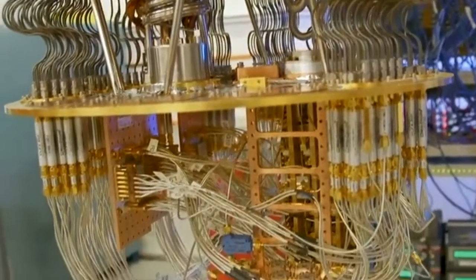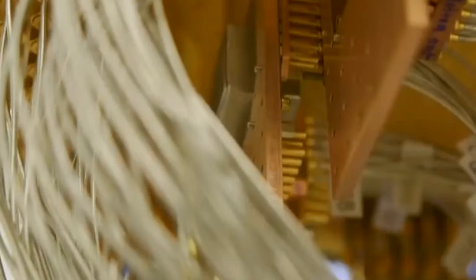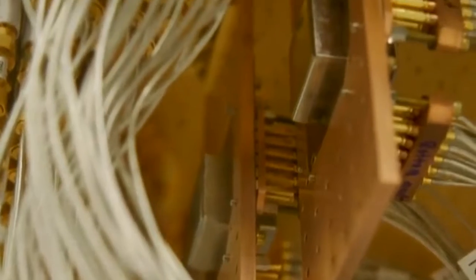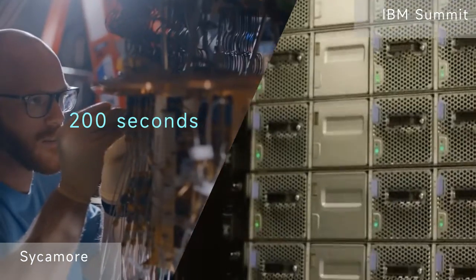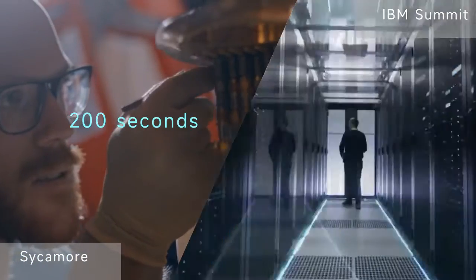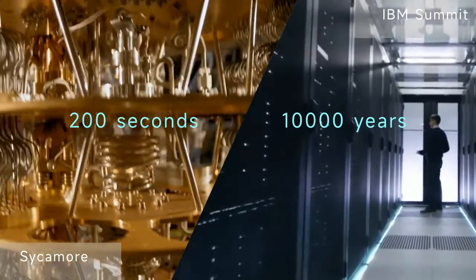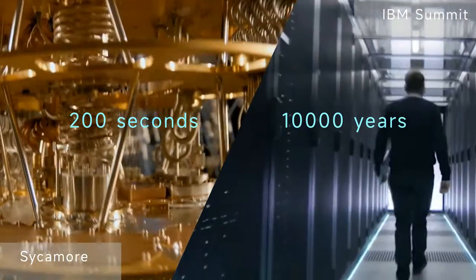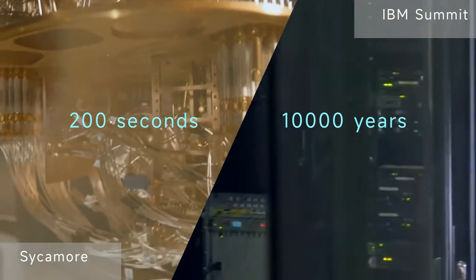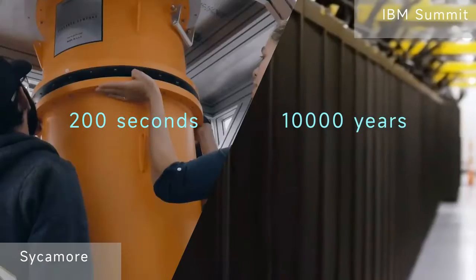On October 23, 2019, Google announced that its quantum computer, Sycamore, had realized the quantum advantage. It took 200 seconds for Sycamore to sample and obtain 1 million data. The fastest supercomputer at that time, Summit, needed 10,000 years to obtain the same data. The so-called quantum advantage has since been achieved for the first time in history.